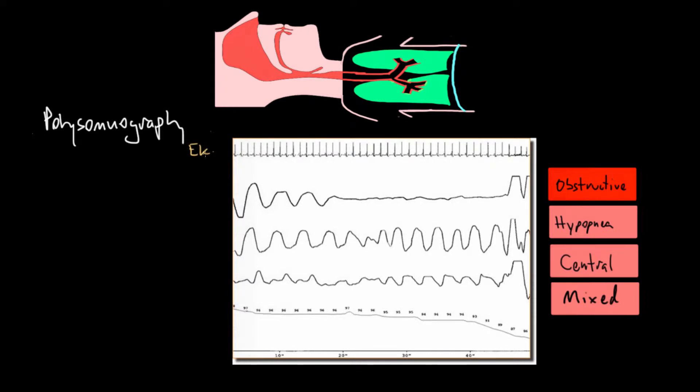This top line here is an EKG, so this is just to monitor the patient's heart. The second line monitors airflow. When you see this line deflecting upwards, this is an inhalation, and downward deflections are exhalation. This middle line represents thoracic effort, and what it's actually measuring is the movement of the chest wall. By telling how much the chest expands, we can get an idea for thoracic effort. The line below it is abdominal effort - it's a similar concept, measuring the movement of the abdomen.